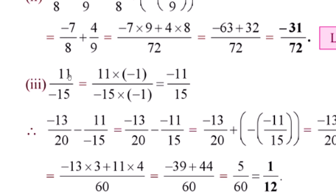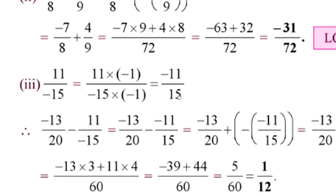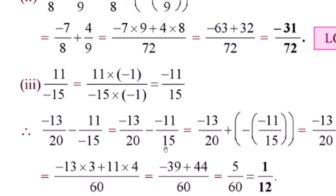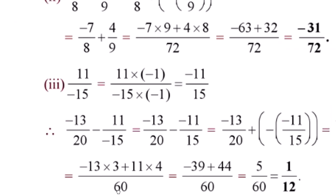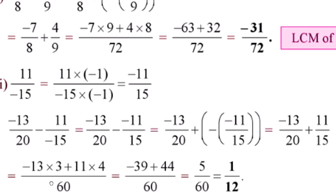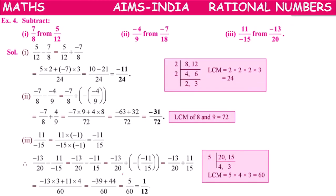Third example: 11/(-15) is not in standard form. Multiply by -1/-1 to get -11/15. Now subtraction written as addition. LCM of 15 and 20 is 60. Coefficients: 15×4=60 (4 into -13 = -52... wait: 3 into -13 = -39), 15×4=60, 4 into 11 = 44. Simplification gives 1/12 as the answer.